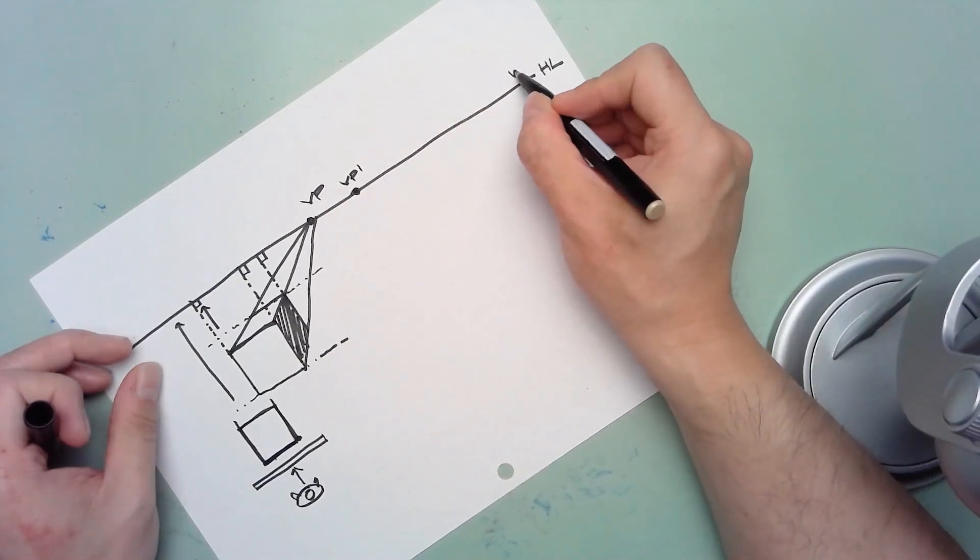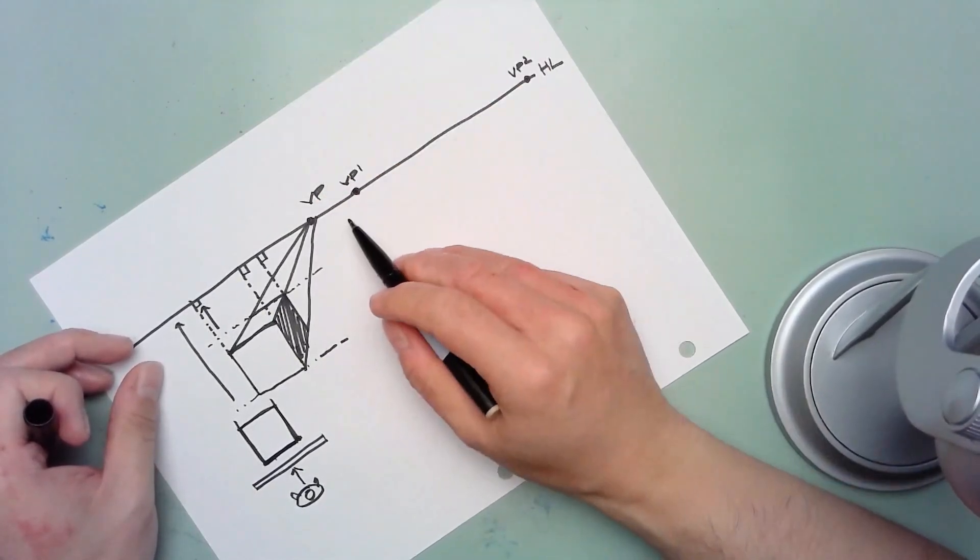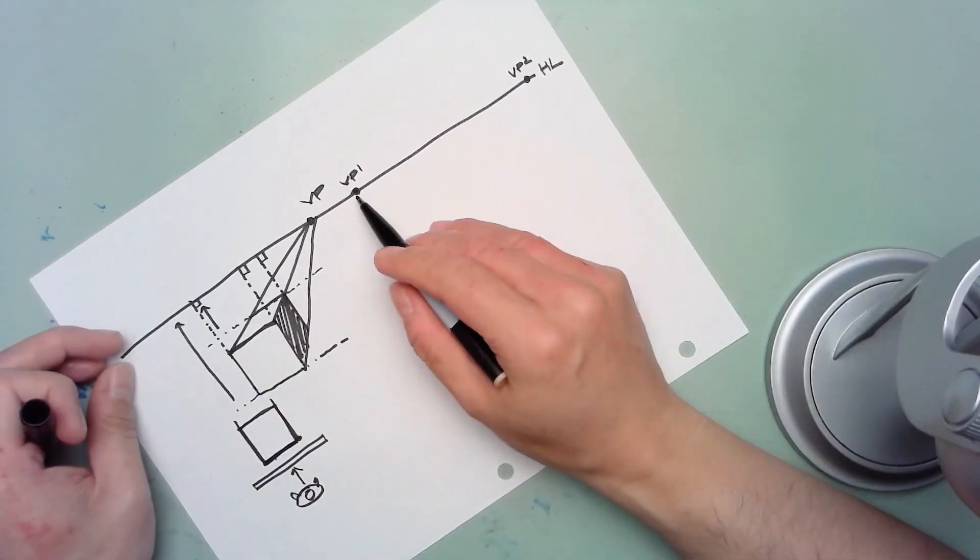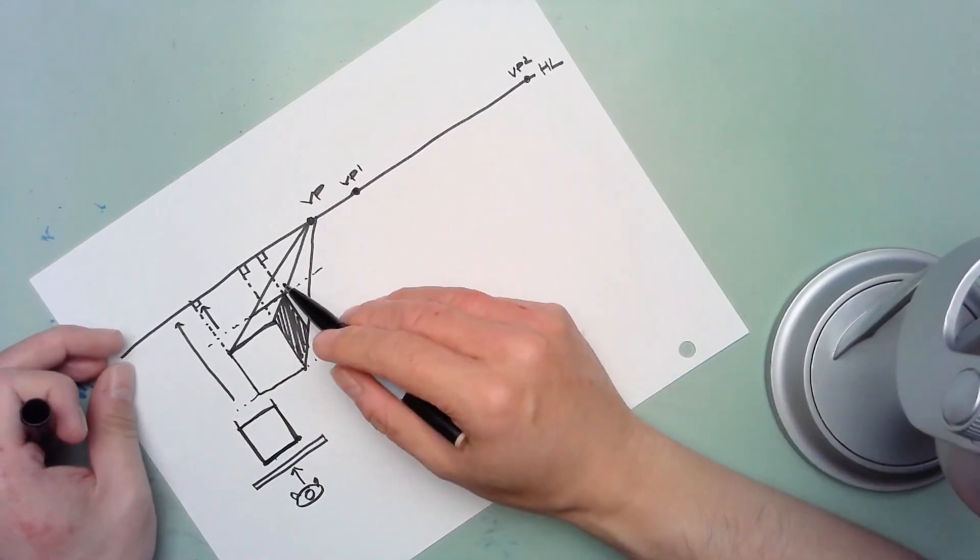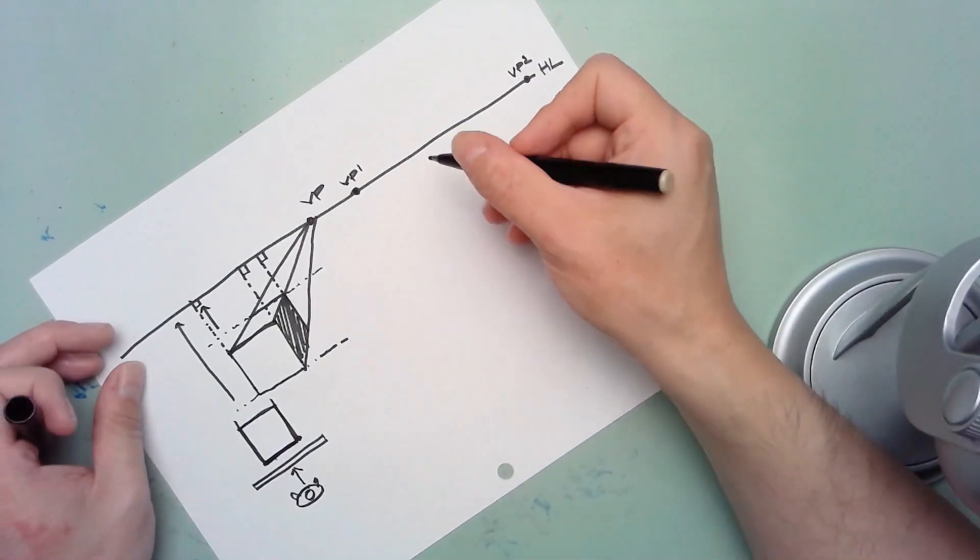So we'll call this VP1 and VP2. In two-point perspective you will still have a horizon line, but the only difference between the one-point perspective and the two-point is that you have two vanishing points.